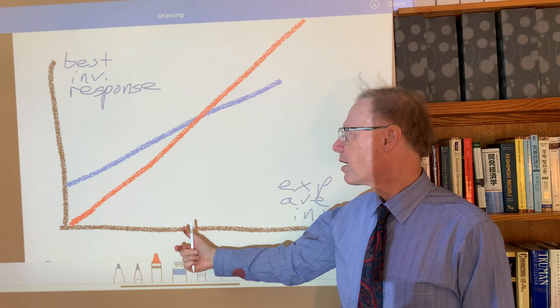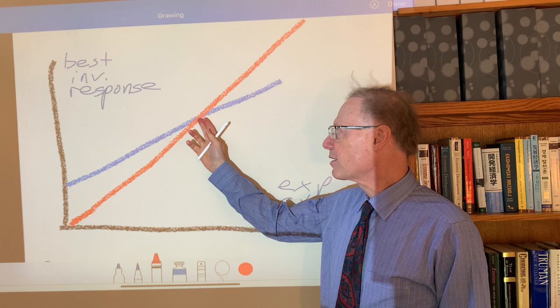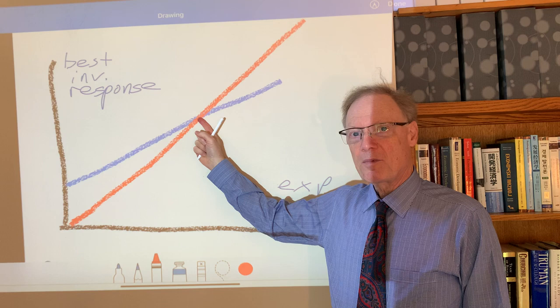So our 45 degree line is a set of situations in which if we think of the firms as being symmetric, when the average investment level corresponds to what's profitable for each individual firm to invest, this is the condition in which we find in equilibrium.